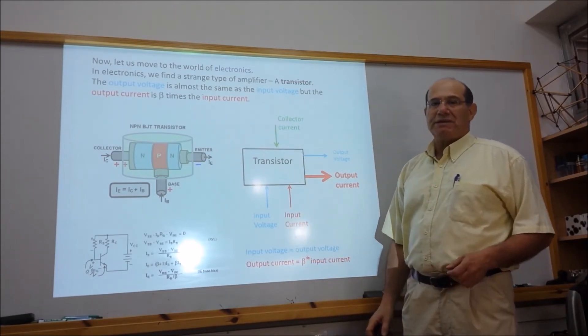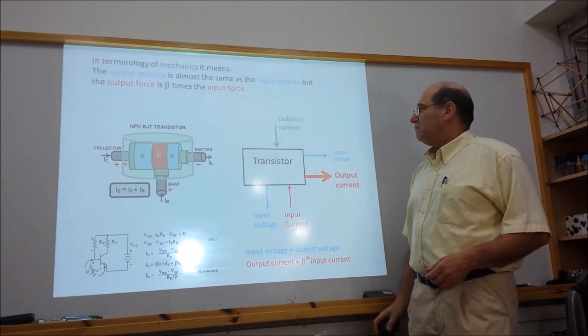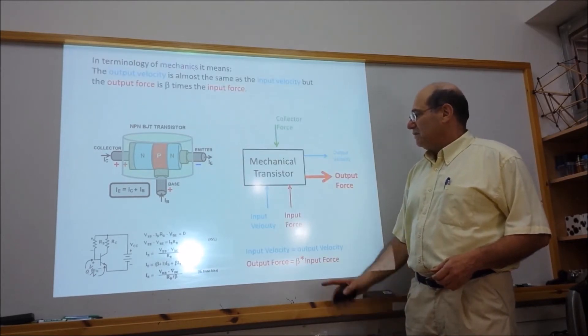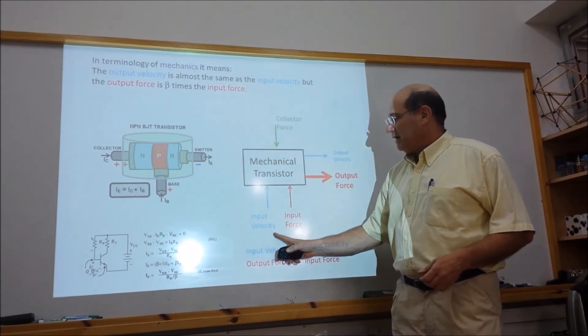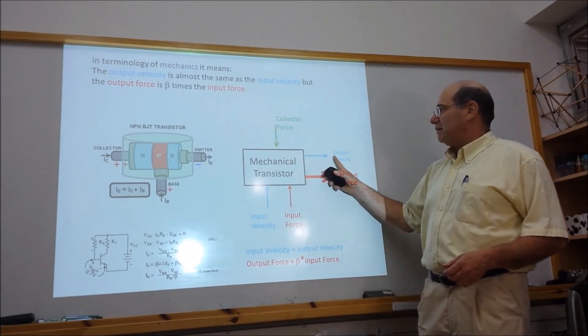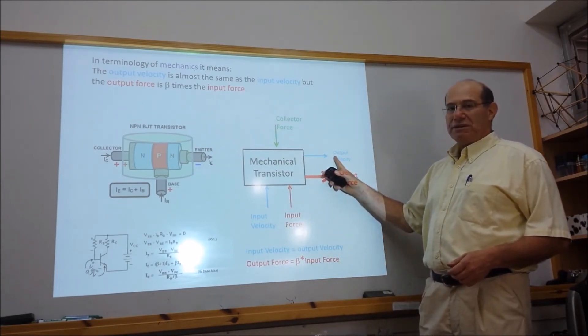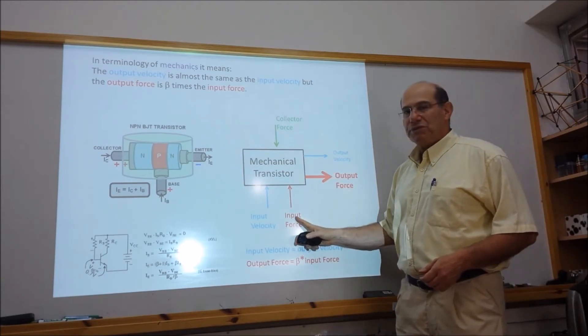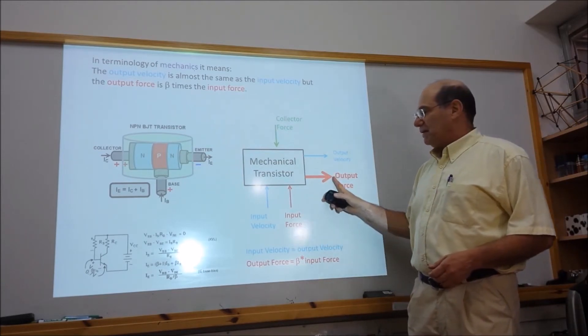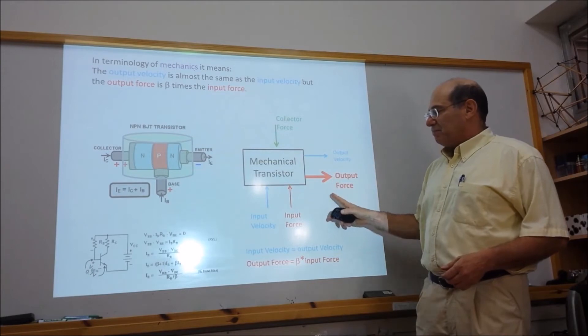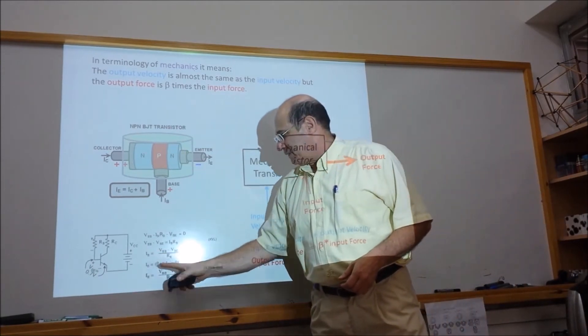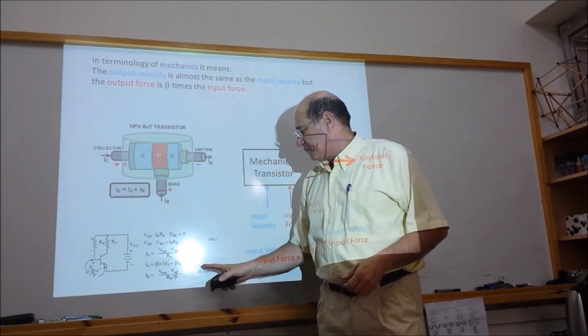If we look at the schematic description of the mechanical transistor, we have the same idea. The input velocity remains the same as the output velocity, while the input force is multiplied by the amplified ratio beta which appears here.